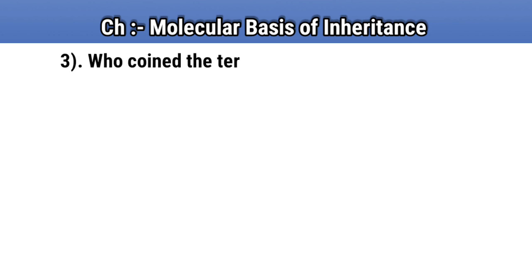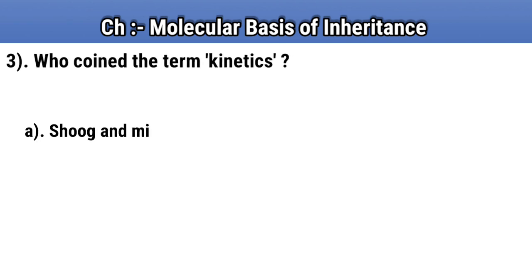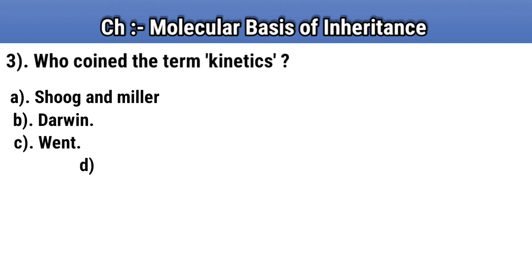Question number 3. Who coined the term kinetin? Option A: Skoog and Miller. Option B: Darwin. Option C: Went. Option D: Kurosawa. Answer A: Skoog and Miller.